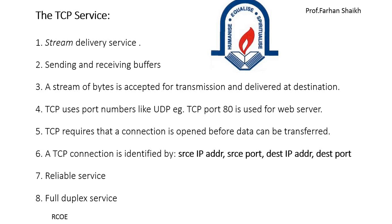The seventh service provided by TCP is reliable service. TCP is a reliable transport protocol, unlike UDP. Different acknowledgements are used by the receiver to convey to the sender the status of data. TCP also offers full duplex service, where data can flow in both directions simultaneously. Each TCP has a sending buffer and receiving buffer, and TCP segments can travel in both directions.